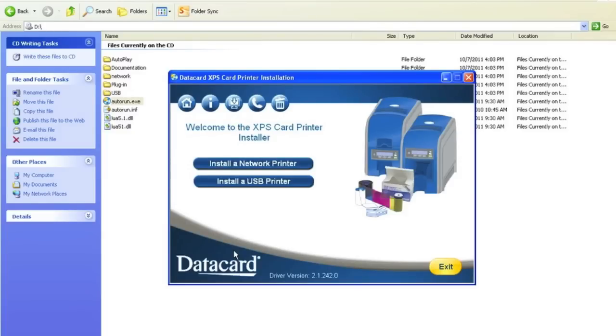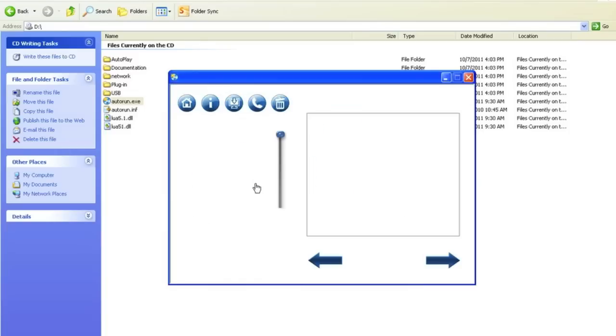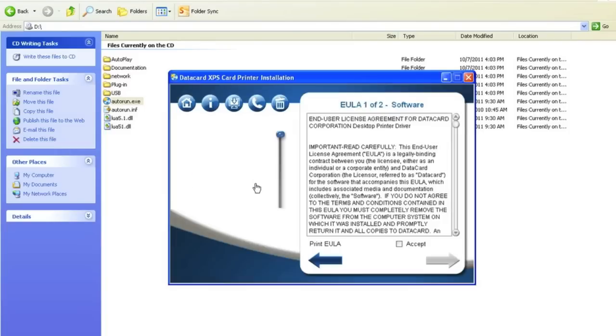First, we will use the USB. To install the printer driver using the USB, from the menu, select Install USB Printer. Select the Accept on the EULA screen and click on the next arrow.